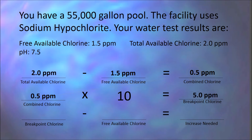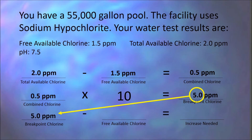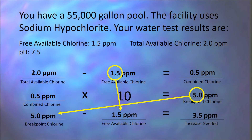Take that breakpoint chlorination number and subtract our free available chlorine level — because we already have that, so we don't need it again. We only need a total of 5 parts per million; we already have 1.5 parts per million. So if I take 5 parts per million — my breakpoint number — and subtract my free available chlorine, that gives me 3.5 parts per million. I need 3.5 parts per million more in order to reach ten times my combined chlorine level and achieve breakpoint chlorination.